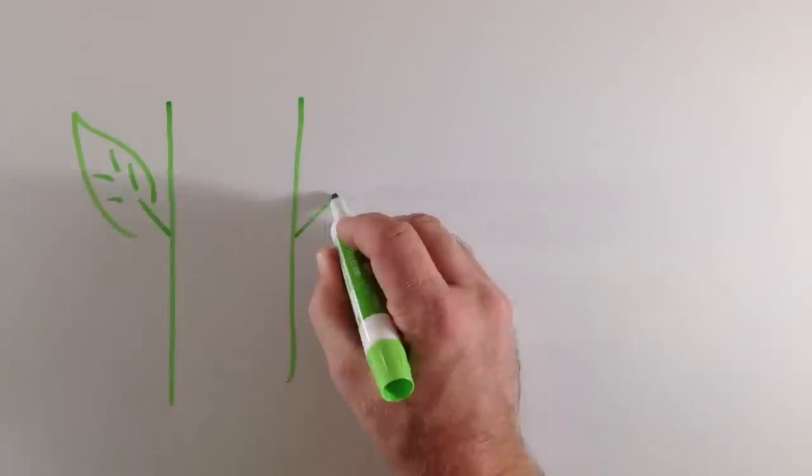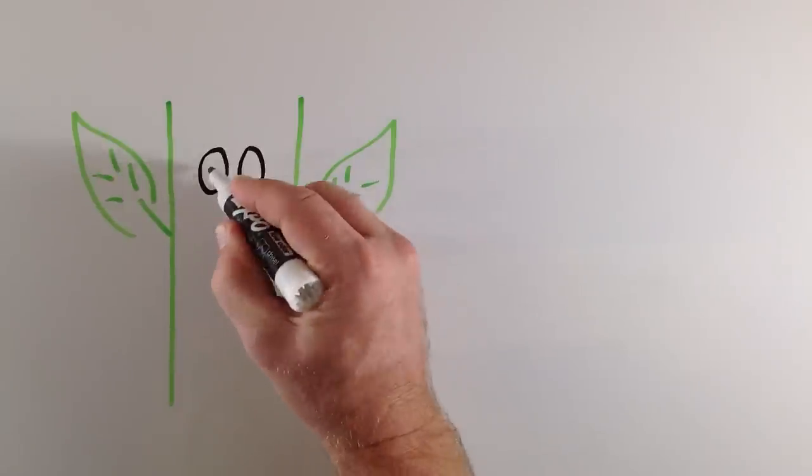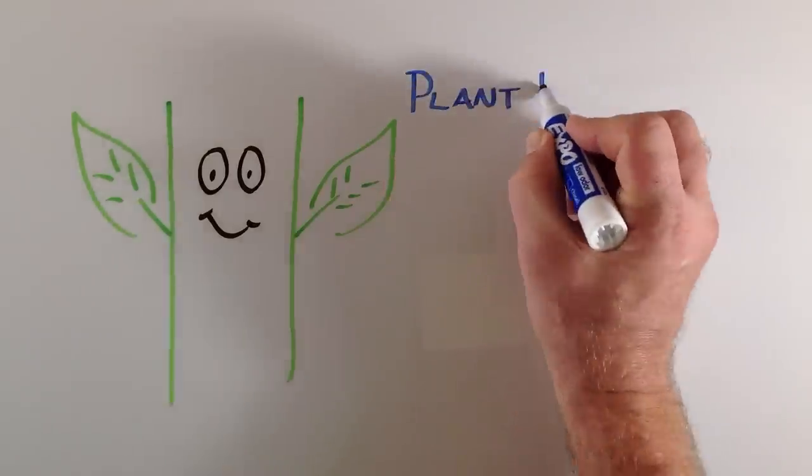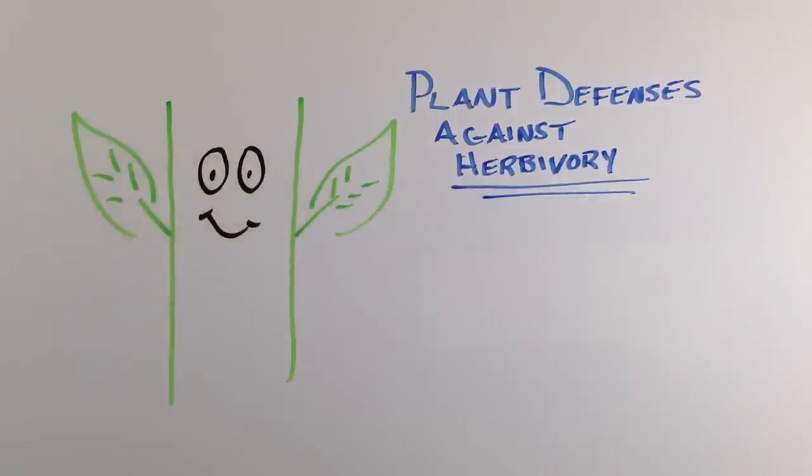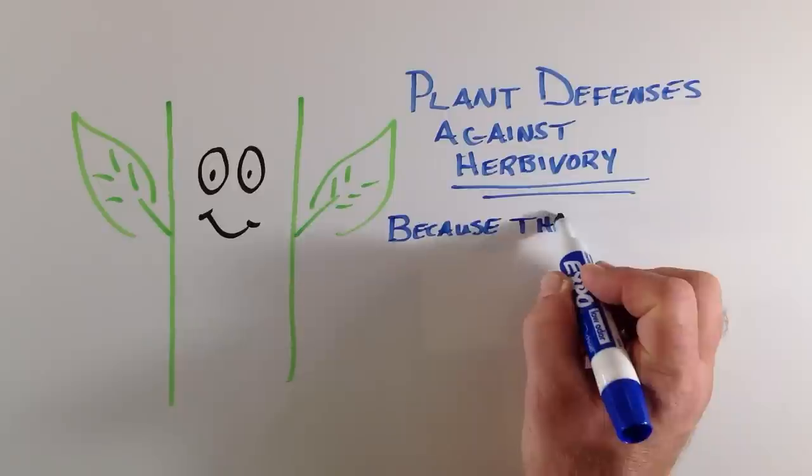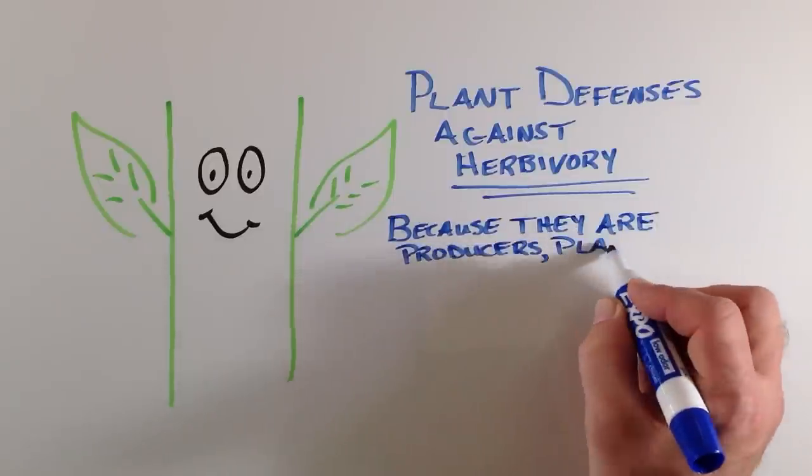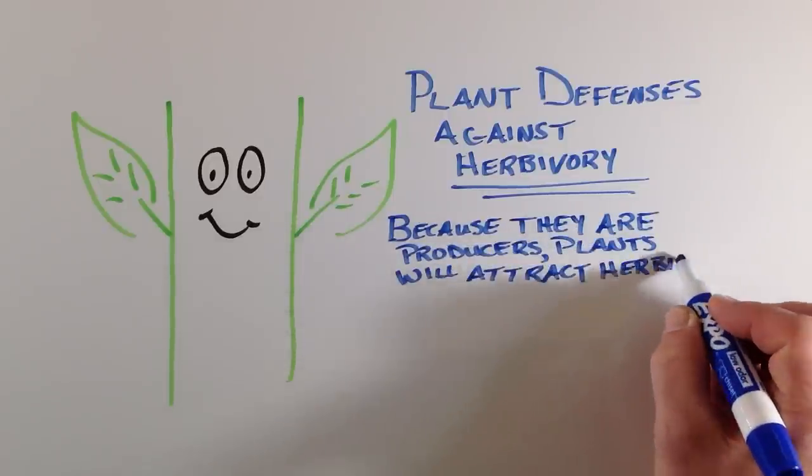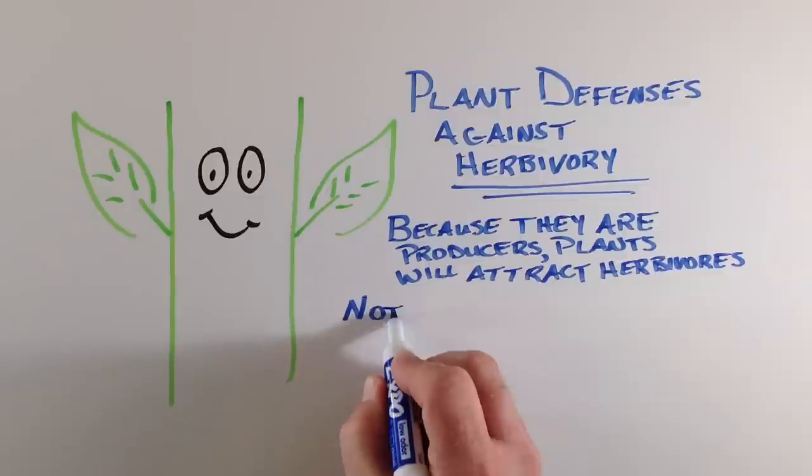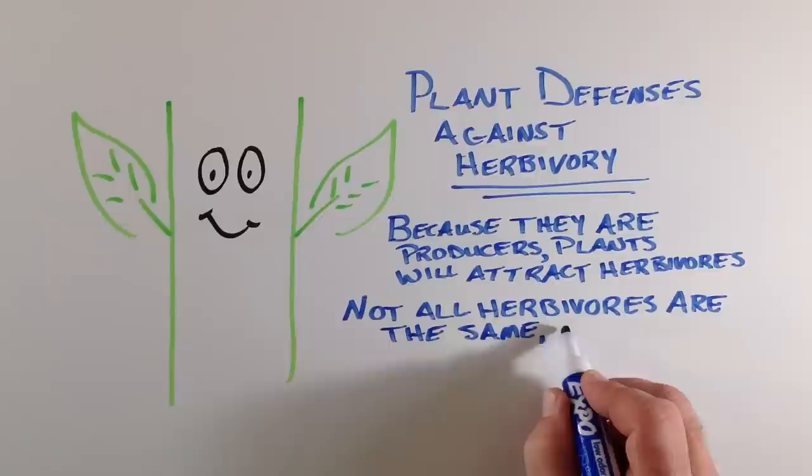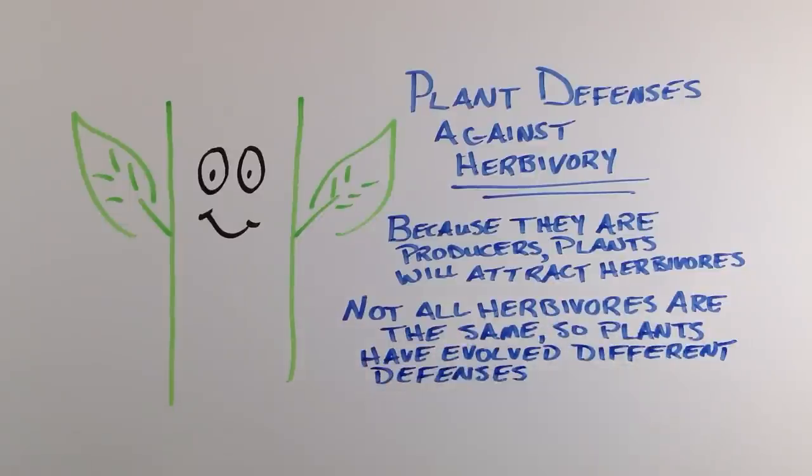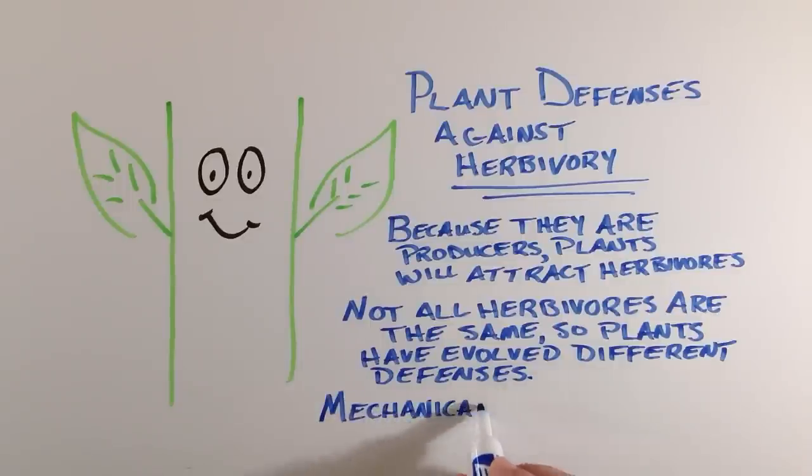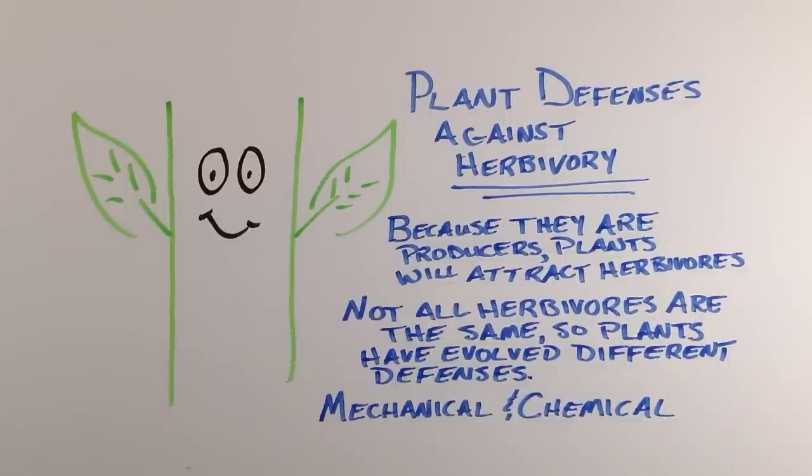So to summarize, as producers, plants are the fundamental source of energy and nutrition in an ecosystem food web. While this is necessary for the ecosystem to function, plants must defend themselves against herbivory to keep it from having lethal consequences not just for the plants but to the entire ecosystem. Now, because herbivores differ in the ways they can attack and eat plants, they must employ a number of different adaptations that are evolved as strategies to defend against herbivory. These defenses fall into two big categories, mechanical and chemical defenses, although there is definitely overlap between them.